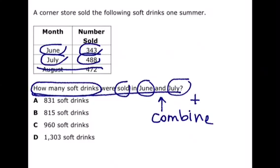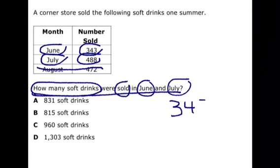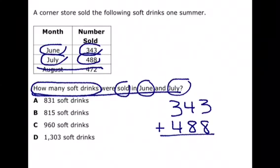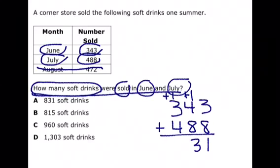So we're going to take 343 plus 488, add them together. 3 plus 8 is 11, carry the 1. 1 plus 4 is 5, plus 8 is 13, carry the 1. 1 plus 3 is 4, 4 plus 4 is 8. 831 soft drinks.